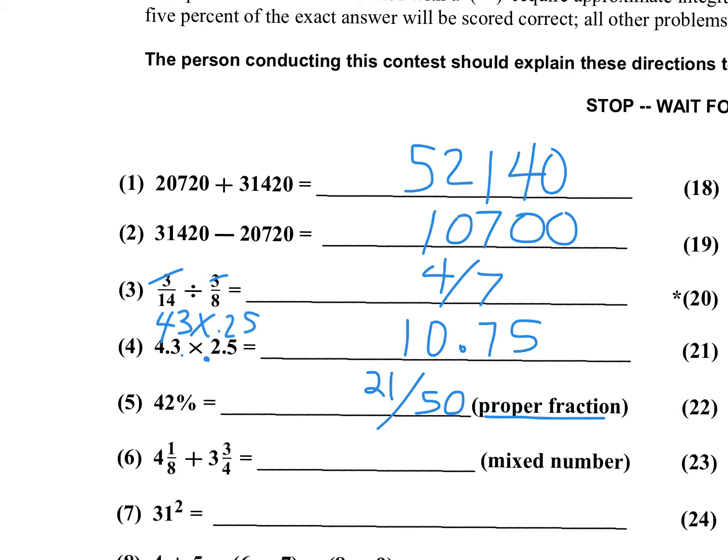Number six. We want the answer as a mixed number. 4 and 1 eighth plus 3 and 3 quarters. 3 fourths is actually 6 eighths. Then you add 6 eighths plus 1 eighth. That would be 7 eighths. And then 4 plus 3 is 7.